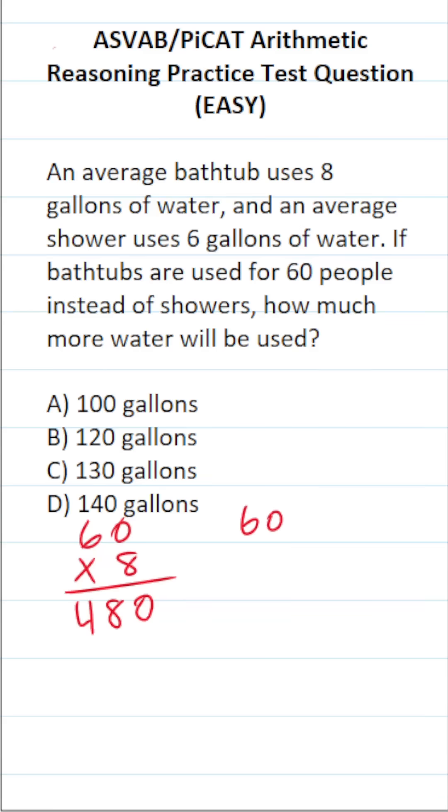Let's say those 60 people took showers. They're each going to use 6 gallons of water. Let's work this out. 0 times 6 is 0, 6 times 6 is 36.